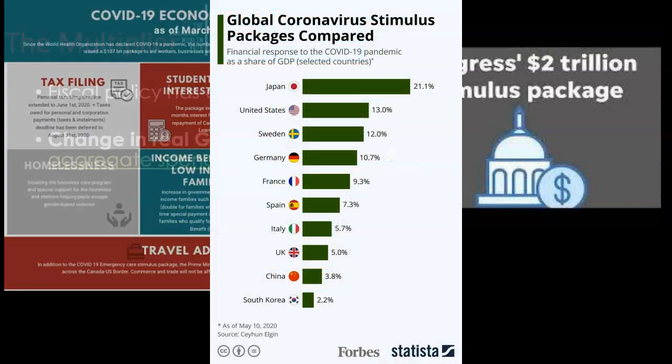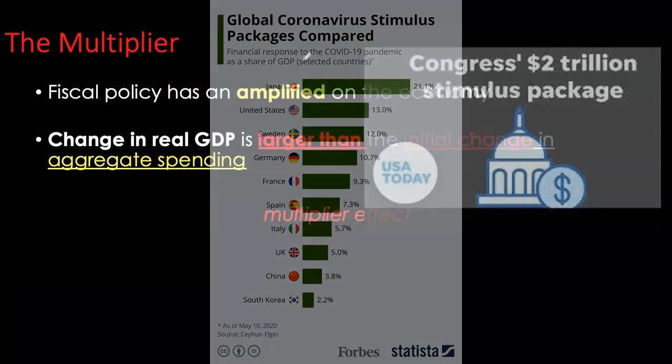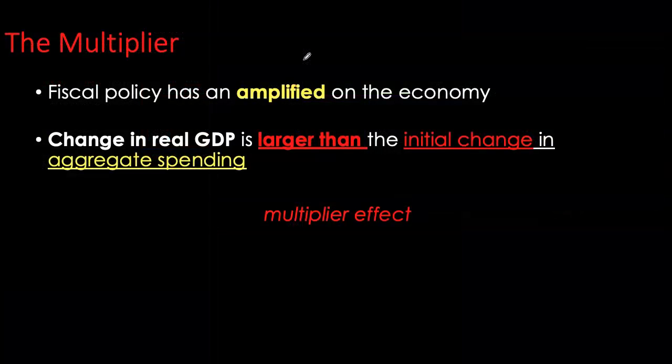Now let's look at the model. We'll go over the simplified version of the income-expenditure model, also referred to as the Keynesian cross model, and see how the multiplier is derived. Understanding the derivation will also help you understand how this amplified effect actually transpires in the economy. We'll start with the consumption function — consumption is a component of aggregate demand, or aggregate expenditure.